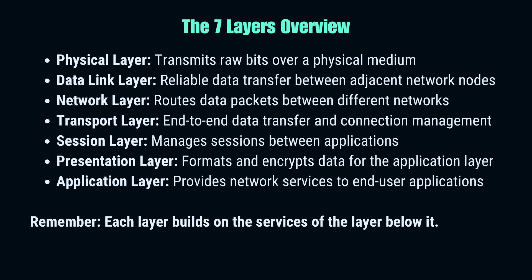Let's take a quick tour of our seven layers. Starting from the bottom, we have the physical layer, which deals with the actual hardware. Next is the data link layer, ensuring reliable data transfer between directly connected nodes. Then comes the network layer, which handles routing between different networks. Above that is the transport layer, managing end-to-end communication. The fifth layer is the session layer, which establishes and maintains sessions between applications. Second from the top is the presentation layer, formatting and encrypting data. And finally, the application layer provides network services to end-user applications. Each layer builds on the services of the layer below it, working together to make our digital communications possible.